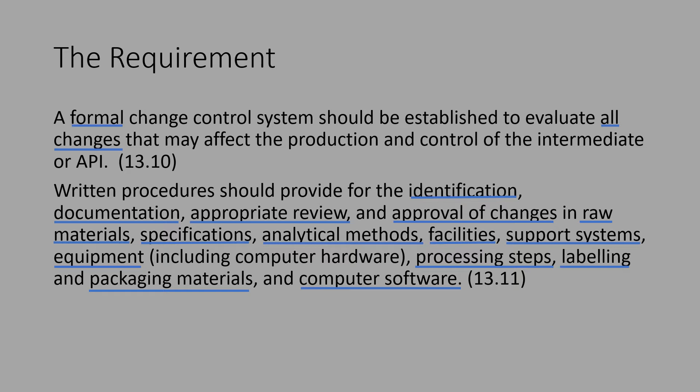How should the written procedure be? There should be a provision to clearly identify what the proposed change is. Documentation means all the intricate details of the change have to be captured in full. Appropriate review is the responsibility of the user to review the change for the expected outcome by implementing it. When the user is satisfied with the scientific justification, they can initially approve and submit for final approval by the quality units, which may add further review features if appropriate.